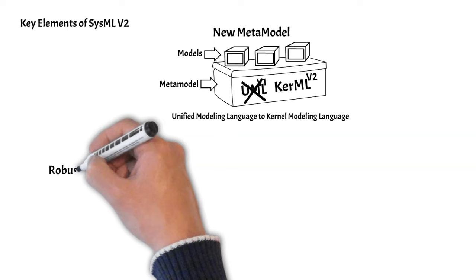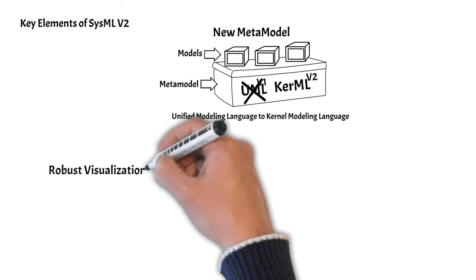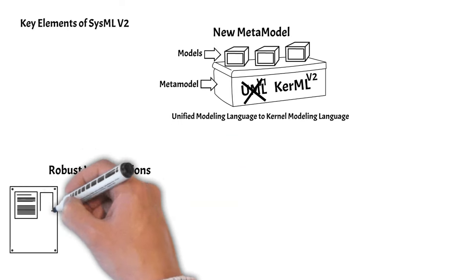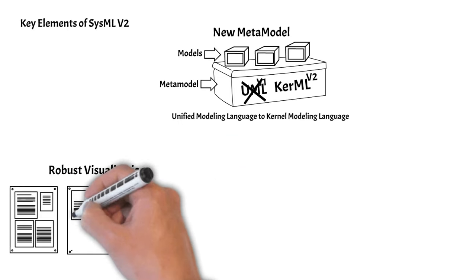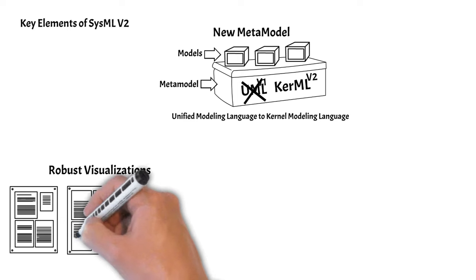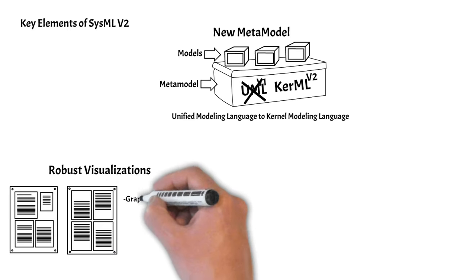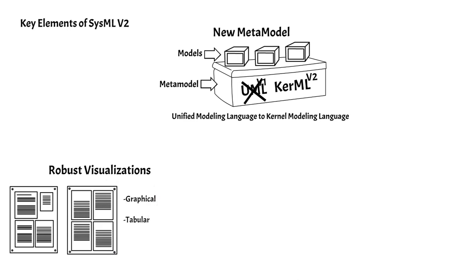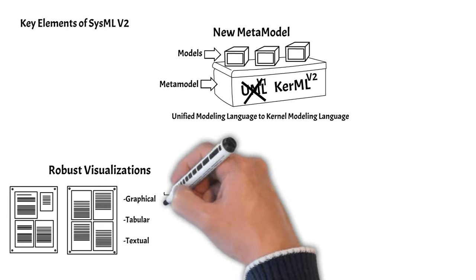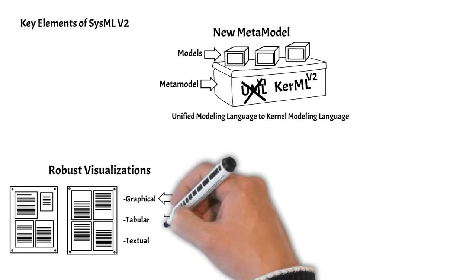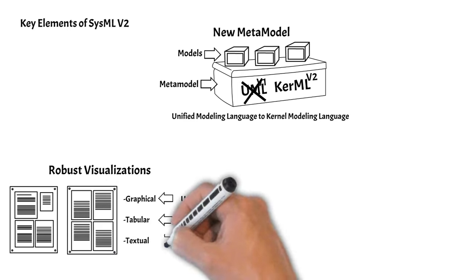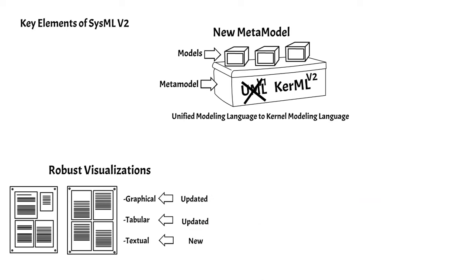The second element of SysMLv2 is its robust visualization capabilities. This includes updated graphical and tabular views and a new textual view. The textual view has the look and feel of a scripting language.